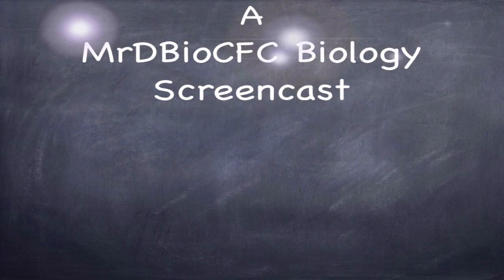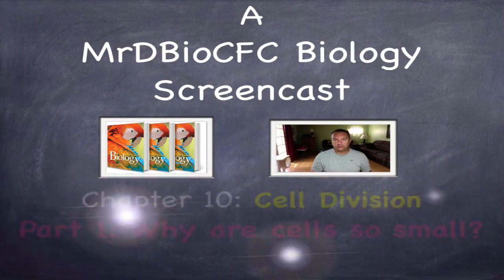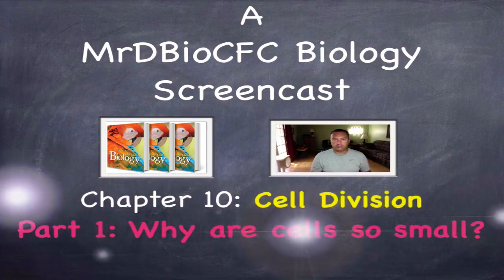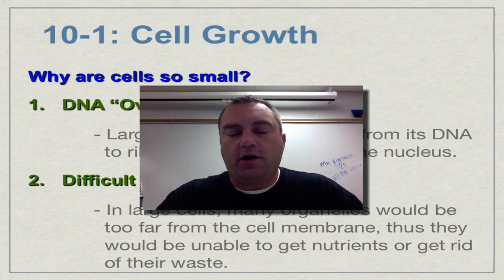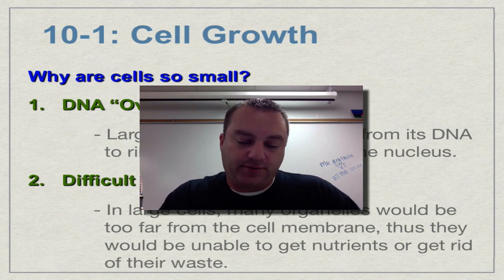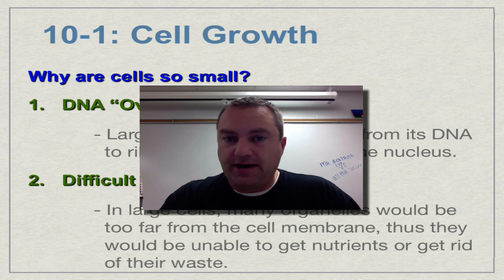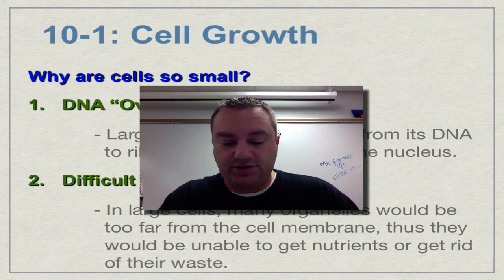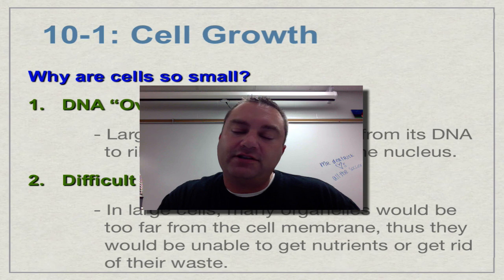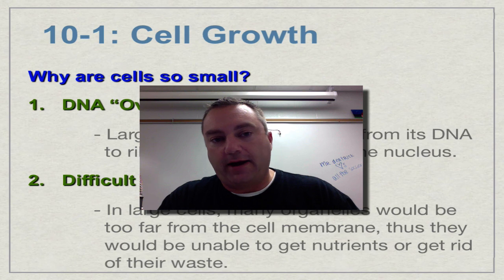Welcome to our first episode in a 10-part series on cell division. In chapter 10 we're going to learn about why cells are so small, how prokaryotic cells go through cell division, how eukaryotic cells go through cell division, chromosome structure, and how a cell controls its growth — and how cancer can be caused when those growth regulations go out of whack.